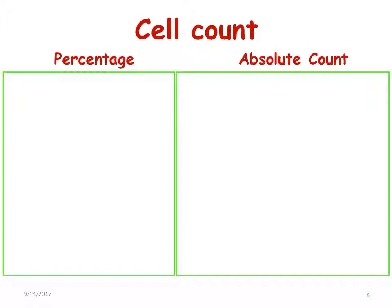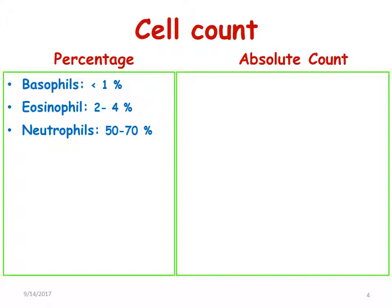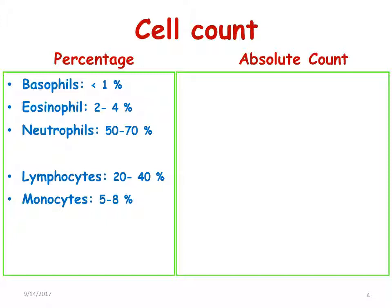Looking at the cell count as a percentage distribution: basophils are less than 1%, making them the least common cells encountered in the film. Eosinophils are 2 to 4%. Neutrophils are 50 to 70%, making up the bulk of the white blood cells. Lymphocytes are 20 to 40% and monocytes are 5 to 8%.